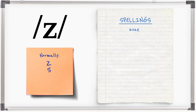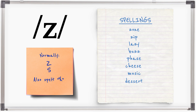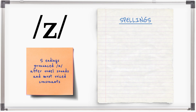Examples include: zone, zip, lazy, buzz, phase, cheese, music, dessert. It's also found in some words with x.